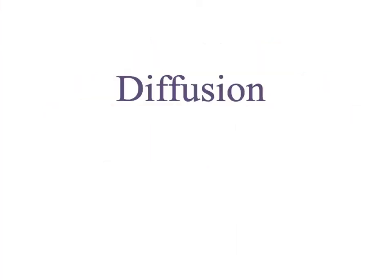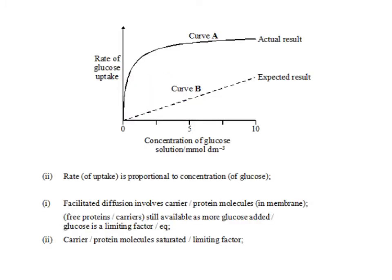First of all, diffusion and facilitated diffusion. This first graph is asking you if you know the difference between what you would expect to find in facilitated diffusion and normal diffusion. Looking at the curves, there are two different descriptions. For curve A, as concentration of glucose increases, the rate of glucose uptake increases steeply at first and then levels off after about two and a half millimoles per decimetre cubed. On curve B, however, the line continues to increase in a proportional manner.